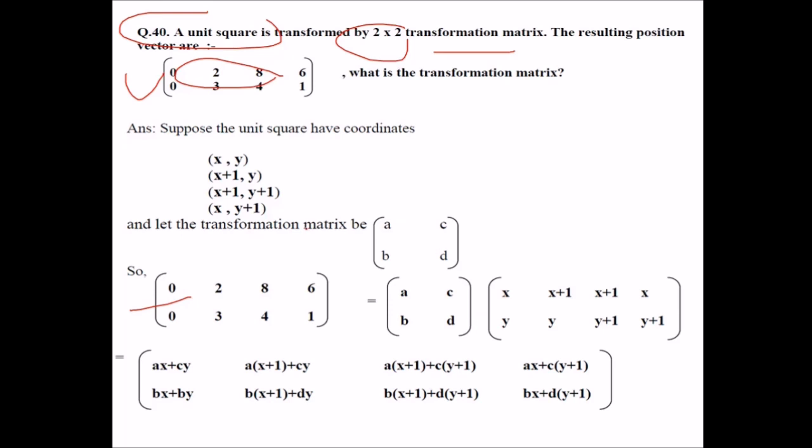So this is the output. So we take it as the transformation matrix. We assume it to be 2 by 2 a, b, c, d. And because this is a unit square, which is given to be a unit square, we have coordinates like this. So x, y, this is x, y, this is x plus 1, this is y plus 1, this will be x plus 1, y plus 1. So we have these four coordinates. You may write like this and just multiply it.